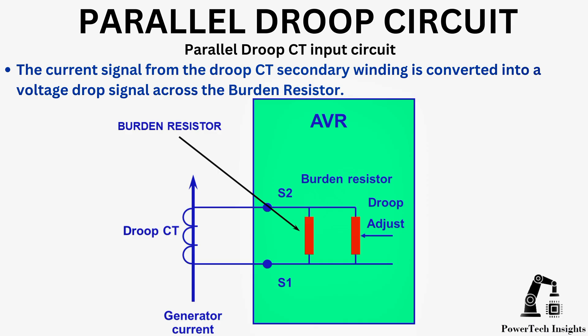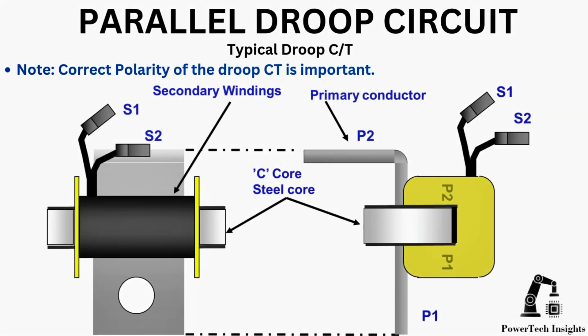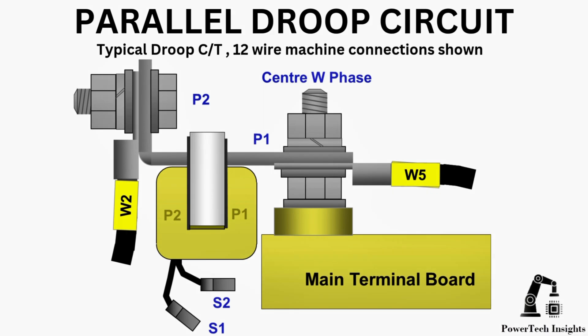Parallel droop CT input circuit. The current signal from the droop CT secondary winding is converted into a voltage drop signal across the burden resistor. Note: correct polarity of the droop CT is important. Typical droop CT 12-wire machine connections are shown in this picture.